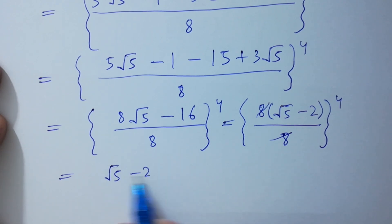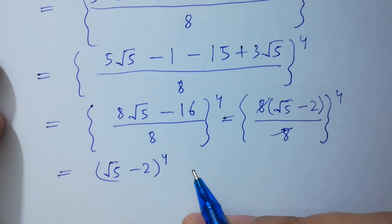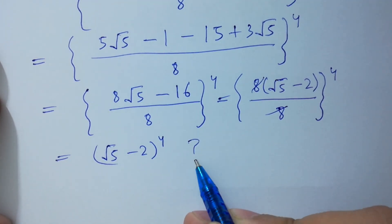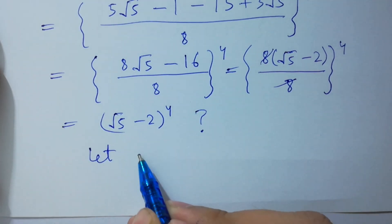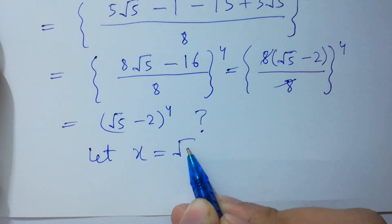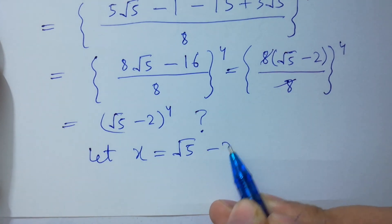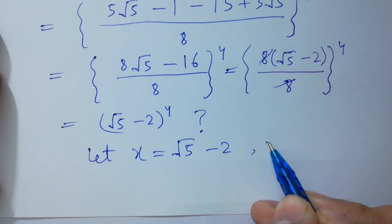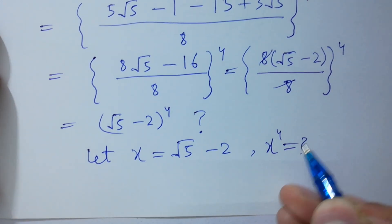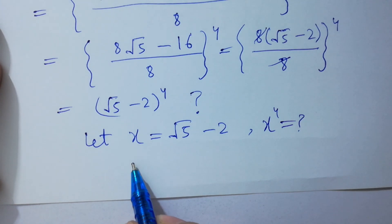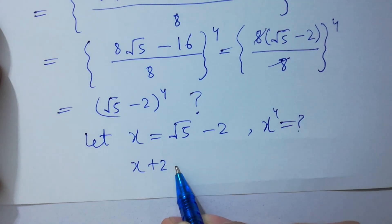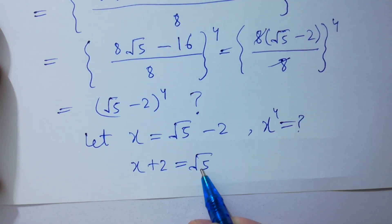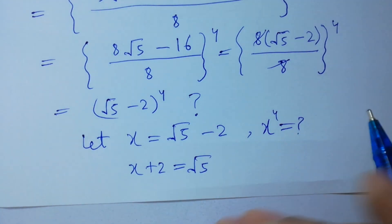Now the main point is how to solve this. Let x equal to square root of 5 minus 2; it means we have to calculate x to the power 4. So x plus 2 equals square root of 5. Now take square on both sides.